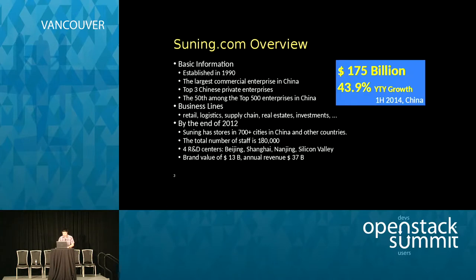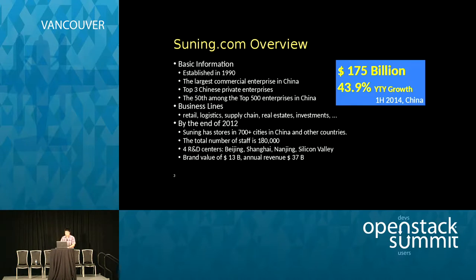Suning.com is one of the largest e-business enterprises in China. The business lines include retail, logistics, supply chain, real estate, investment, and so on. By the end of 2012, Suning has stores and e-business platforms in over 700 cities in China Mainland, Hong Kong, and Japan. The number of staff is 180,000, among them about 4,000 IT-related colleagues. They have four research centers in Beijing, Shanghai, Nanjing, and Silicon Valley.